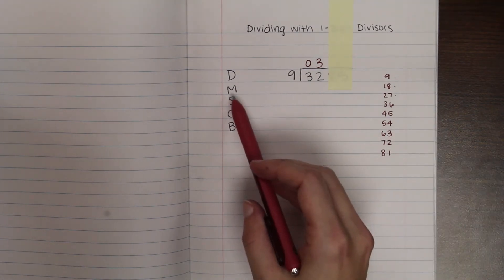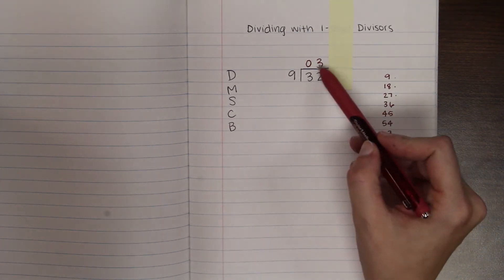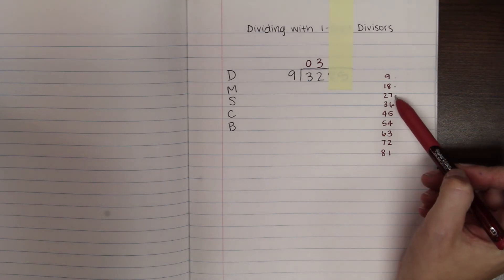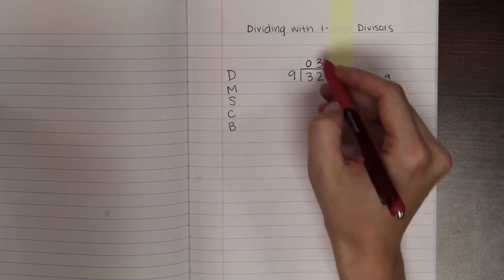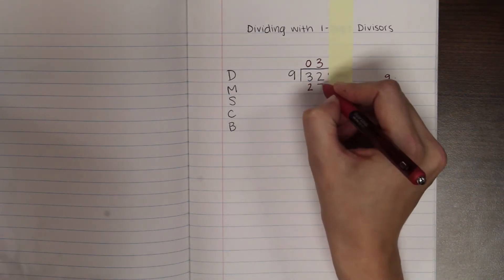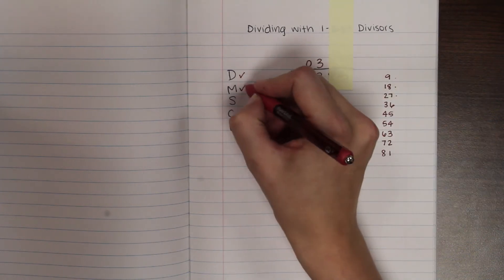So now my next step, multiply. I'm going to take 9 times 3, which was 27 I just figured out, and put that underneath 32. That's my multiply step. So I've now done division, I've done multiplication.